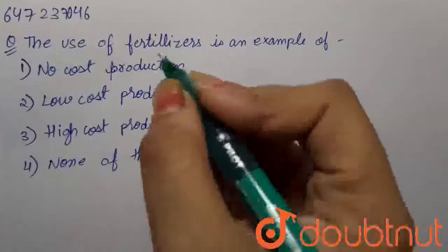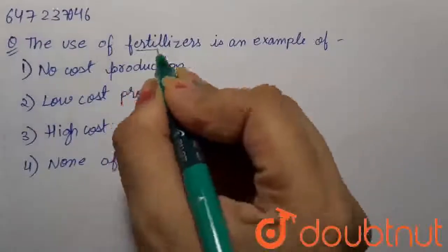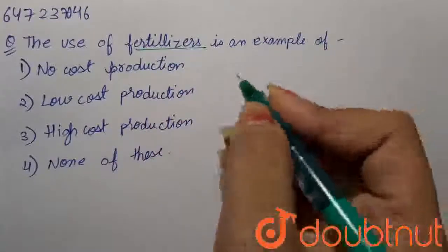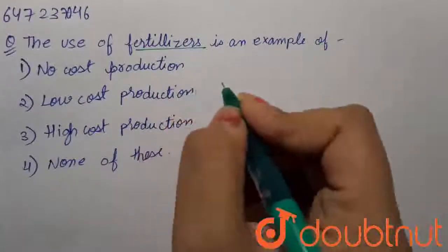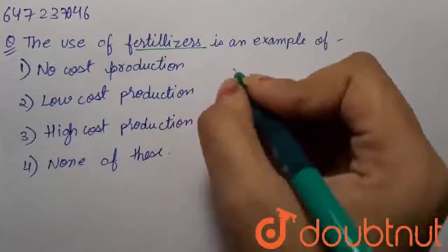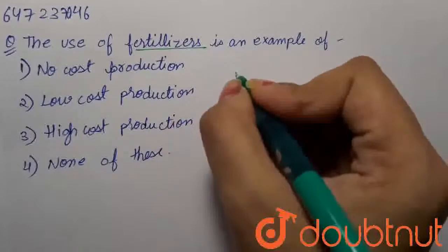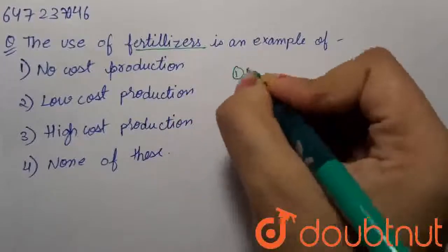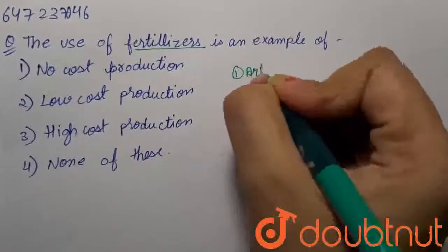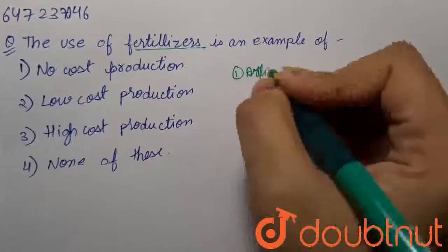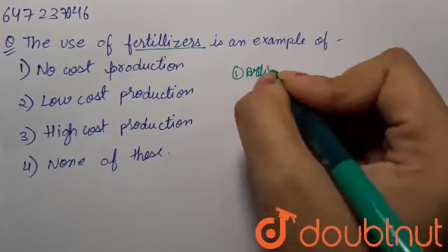Okay, so the question is: the use of fertilizers is an example of what? We all know fertilizers are artificial supplements that are used by farmers in order to increase their crop production for healthy crops.